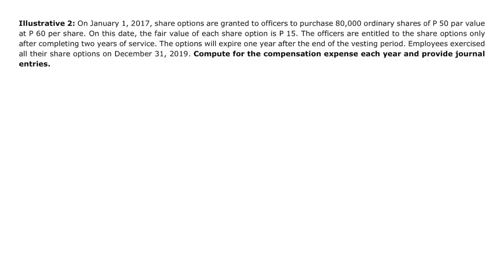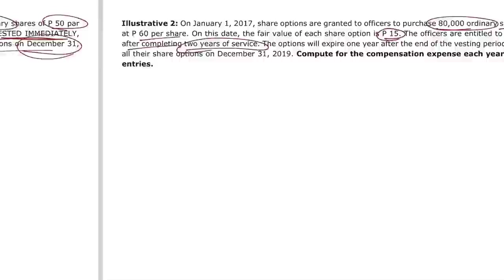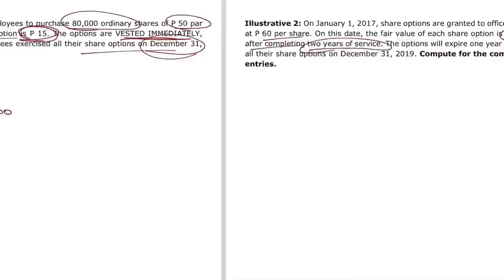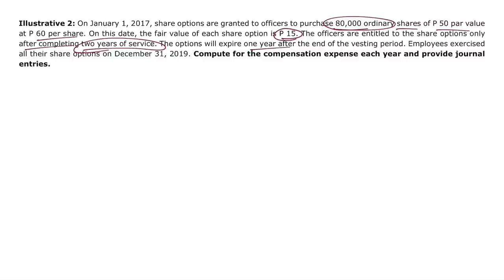Illustrative Problem 2: Same setup — 80,000 share options, 50 par value, 60 pesos exercise price, fair value of 15 pesos — but now officers must complete two years of service before the options vest. So the total compensation expense of 1.2 million is spread over the two-year vesting period. Options expire one year after the vesting period, and employees exercise all share options on December 31, 2019.